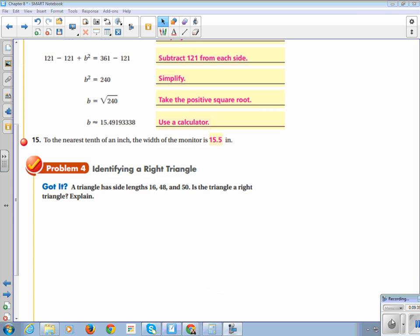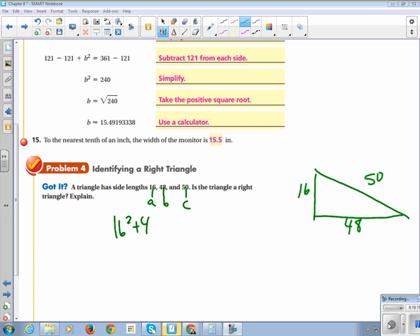We're going to use the converse of the Pythagorean theorem for problem number four. We're going to identify a right triangle. A triangle has side lengths 16, 48, and 50. Is the triangle a right triangle? So, this has got to be a leg. This has got to be a leg, and this has got to be the hypotenuse, because you can only have the longest side as a hypotenuse. I'm going to draw the triangle, because it's always helpful to have a picture. I'm going to see if 16 squared plus 48 squared is equal to 50 squared.